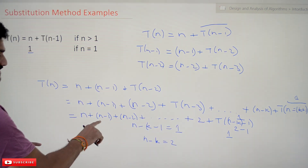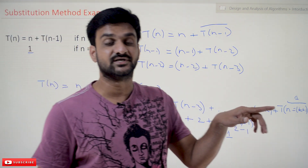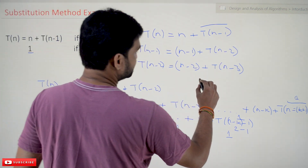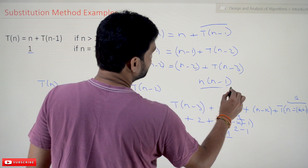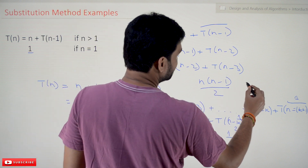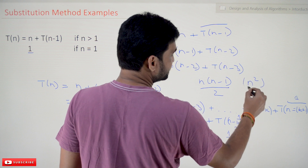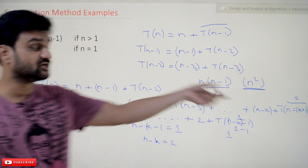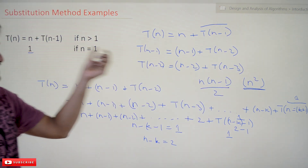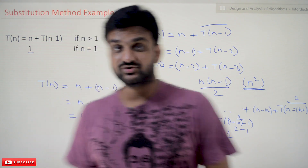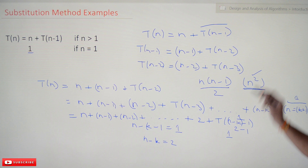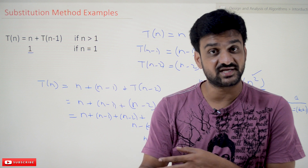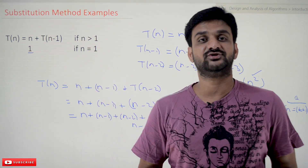Now the equation looks like 1 + 2 + 3 + 4 + ... + (n-2) + (n-1) + n, which is the sum of n natural numbers. The formula for the sum of n natural numbers is n(n+1)/2. Expanding this, the higher-order term is n². Therefore, the efficiency of this recurrence algorithm is O(n²). This is how we find the efficiency using the substitution method.